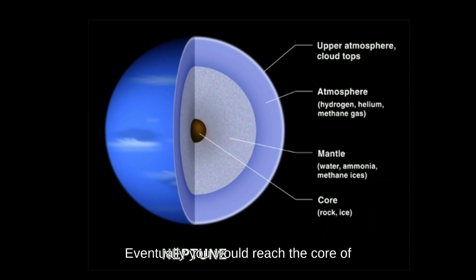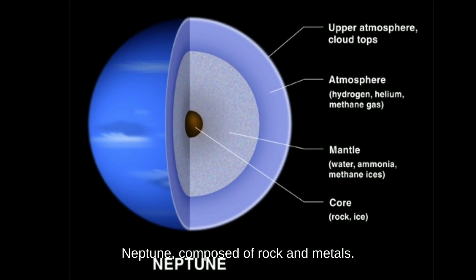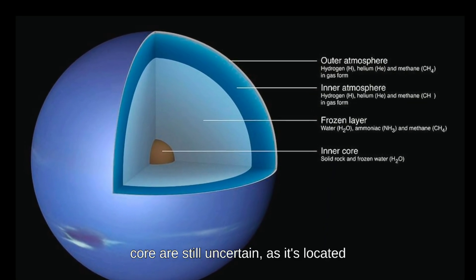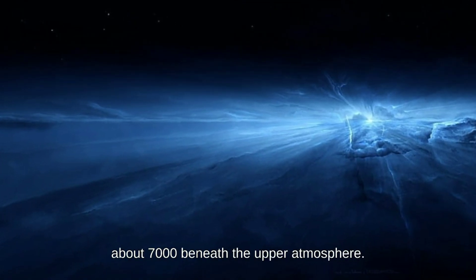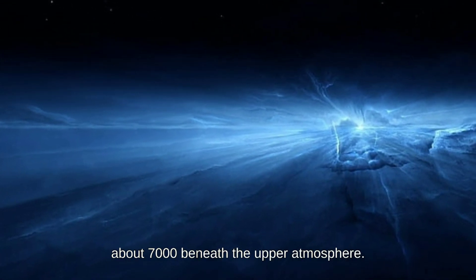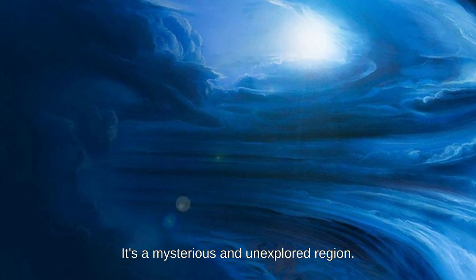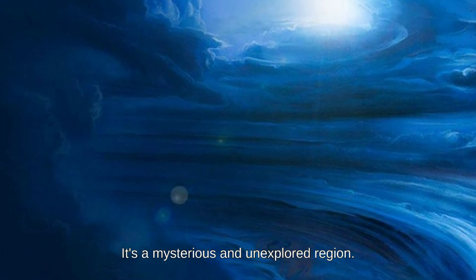Eventually, you would reach the core of Neptune, composed of rock and metals. The exact composition and structure of the core are still uncertain, as it's located about 7,000 kilometers, 4,350 miles, beneath the upper atmosphere. It's a mysterious and unexplored region.